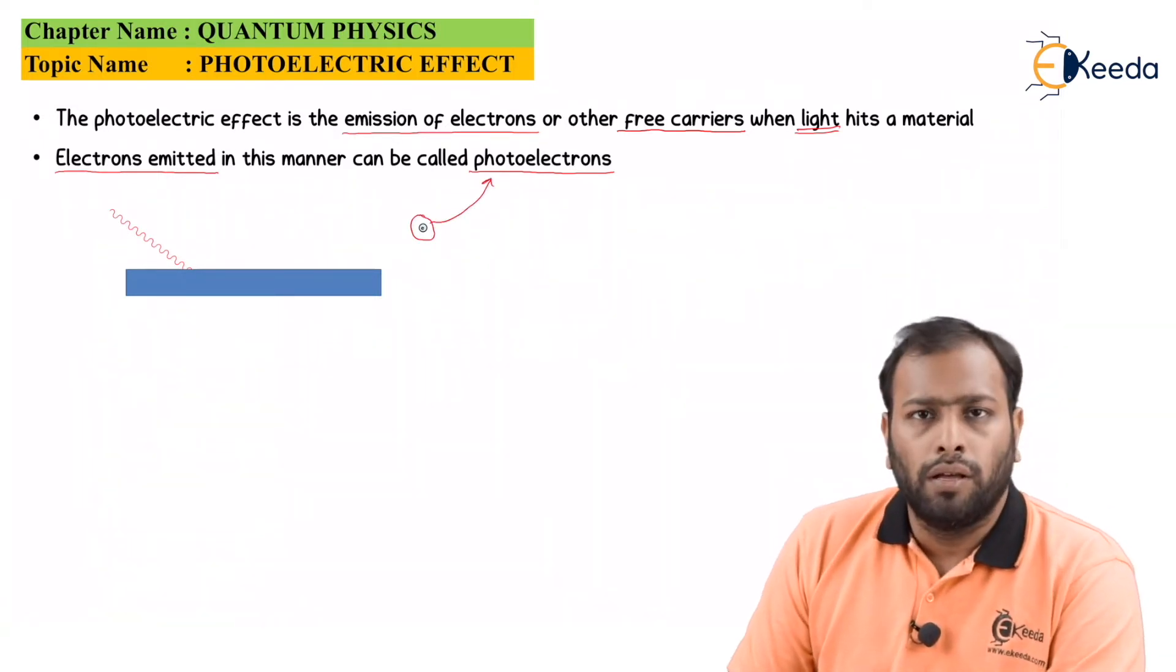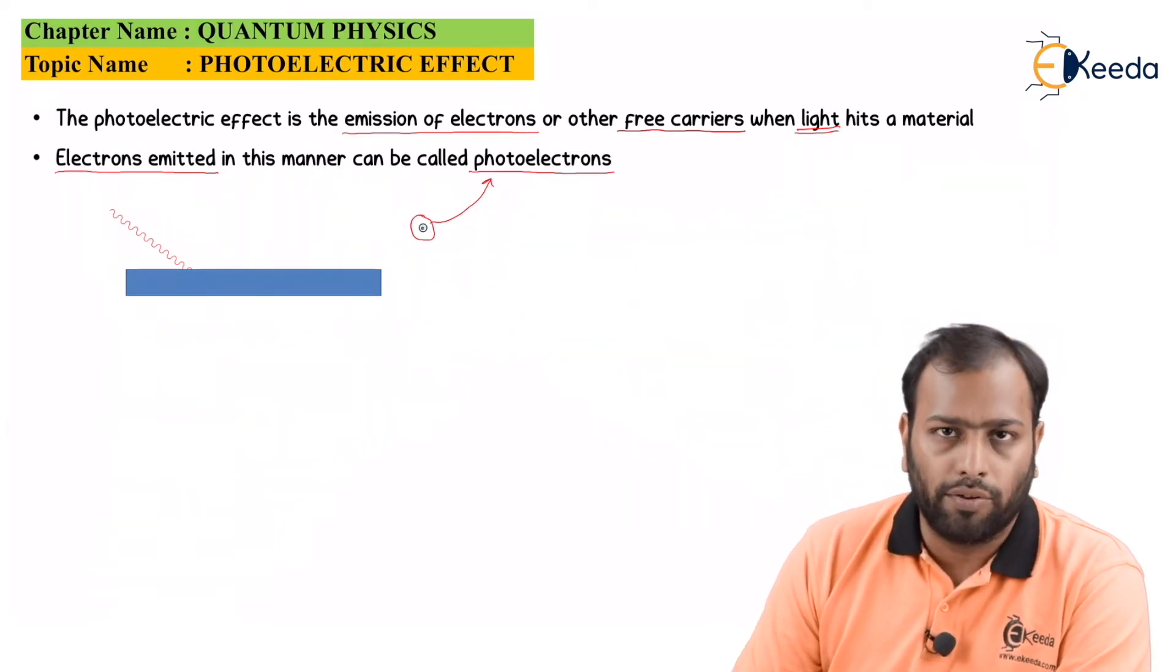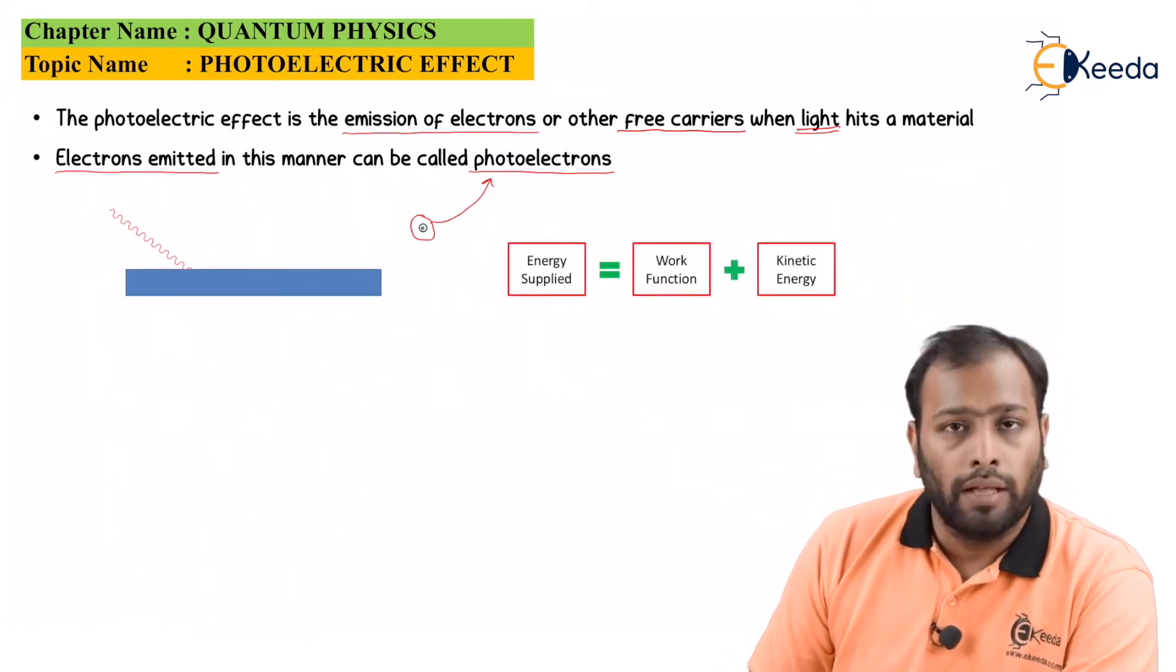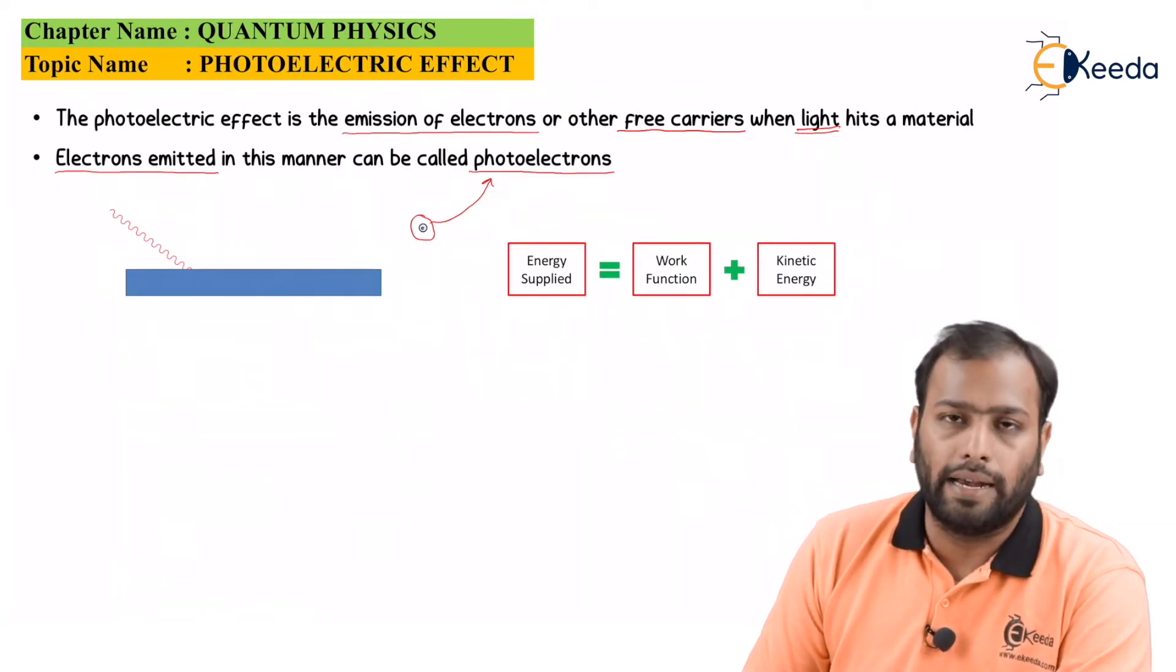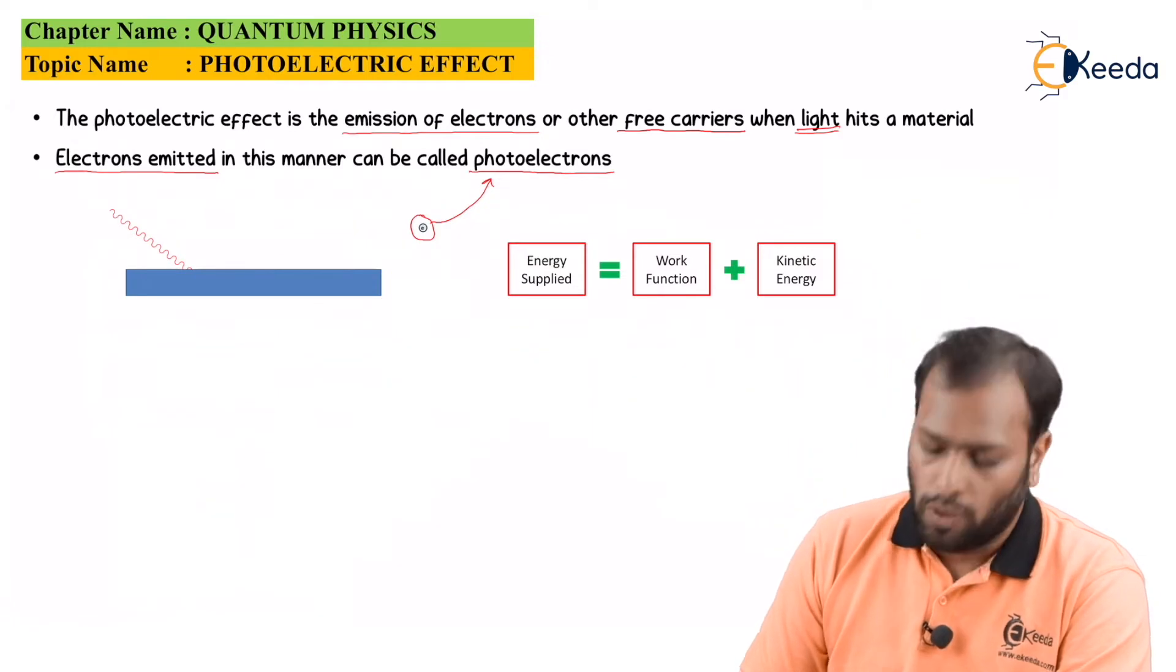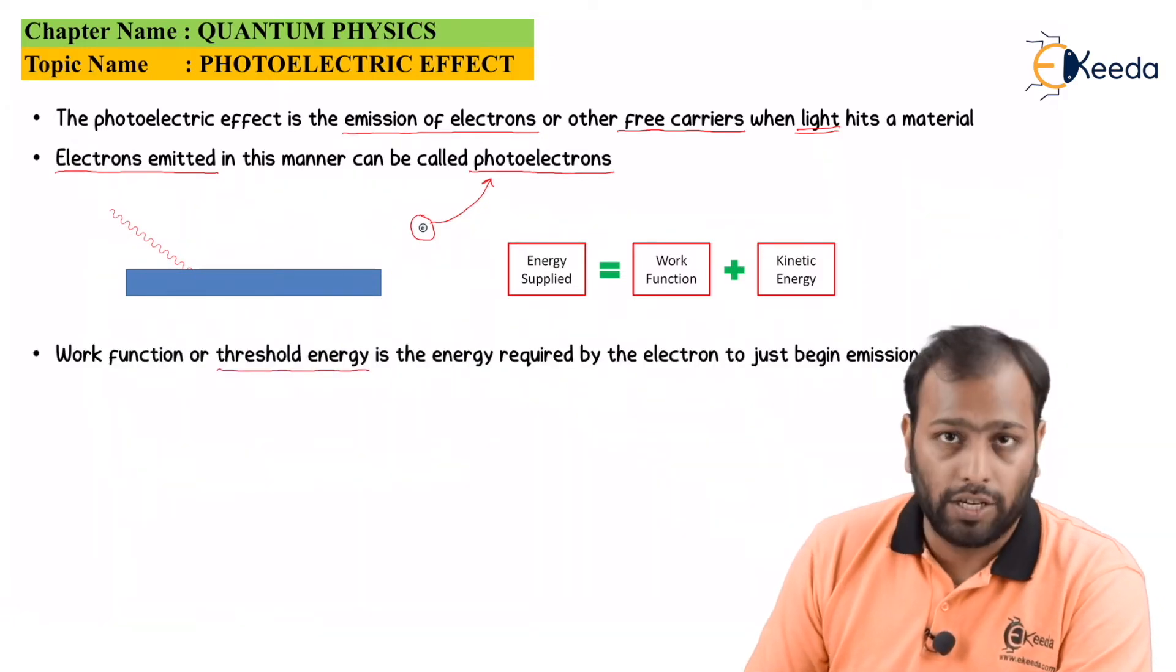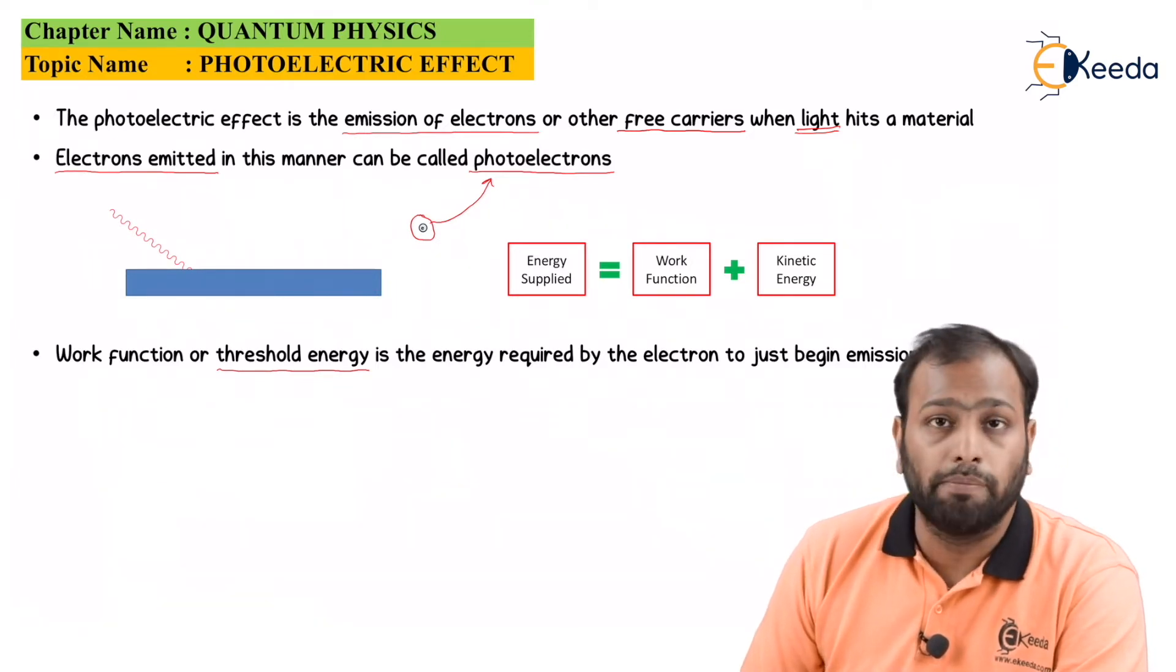Now, is it always true that whatever energy that you provide to the material gets into the electron movement? Well, that's no. Why? Because there is a certain amount of energy that an electron needs to actually begin the emission. Well, the equation stands out to be: energy supplied equals work function plus the kinetic energy. Now, what is this work function? Well, work function is the threshold energy. It is the threshold energy or the minimum energy which is required by the electron to just begin the emission.